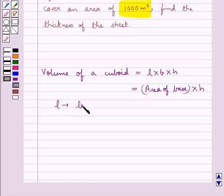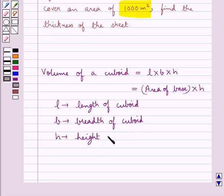L is the length of the cuboid, B is the breadth of the cuboid, H is the height of the cuboid, and we have the area of the base of the cuboid is equal to length into breadth of the cuboid.